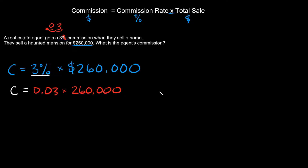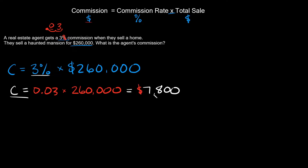Now throw it into your calculator: 0.03 times 260,000 equals 7,800. So the commission is equal to $7,800. Hopefully that wasn't too bad — let's try one more example.